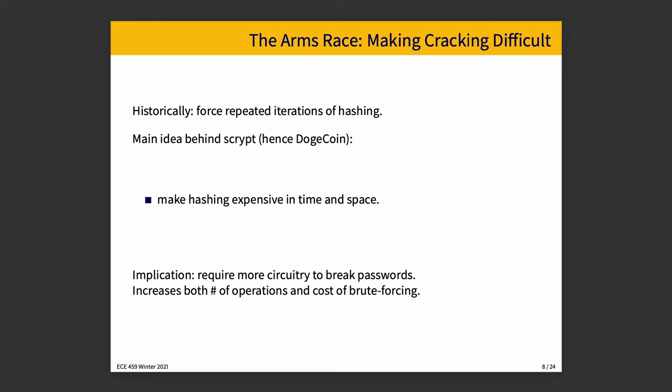The main idea behind scrypt as a particular example of a cryptographic hashing algorithm is to make hashing expensive in time and space — making the number of operations it takes to brute force it take more time and take more circuitry. That increases the difficulty, making it implausible to crack for a reasonable time frame. Given infinite time and infinite computers, you can crack anything. But nobody has infinite time — if it takes a thousand years for attackers to crack my bank details, that doesn't help them very much. I will probably be dead in a thousand years and probably the bank I bank at will cease to exist. You have to make it impractical, not impossible.